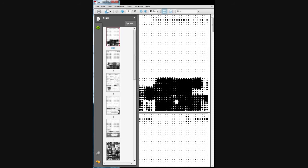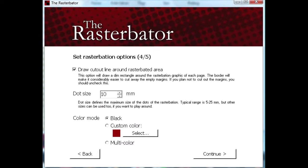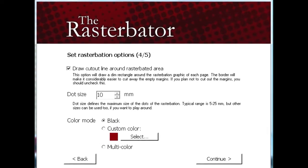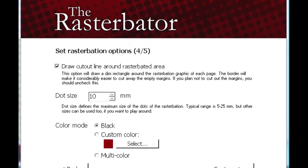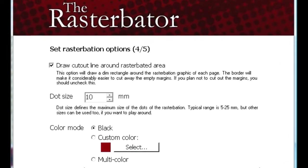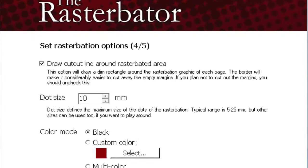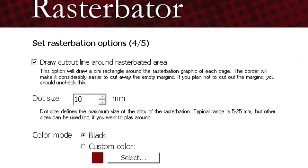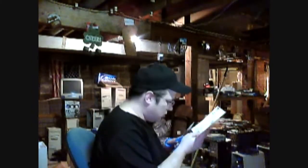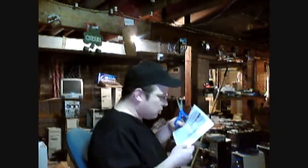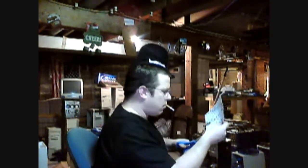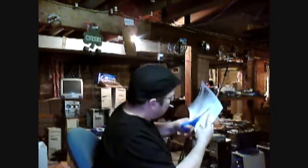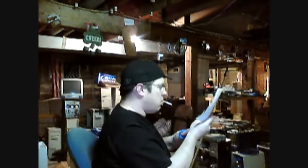So remember, back at step four, I said 'set rasturbation options' — that sounds so bad. Anyways, it says 'draw cutout line around rasturbated area.' That's what I did. And now here's me cutting the stuff up.